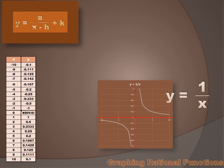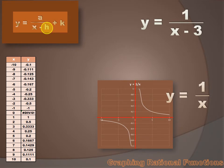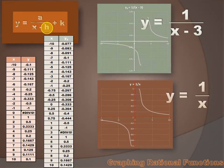We've only got one left — that h. What do changes in h do to the graph? In the parent function, h is 0: y equals 1 over x minus 0. But what if the equation was y equals 1 over x minus 3? How would the graph be changed? Well, this is a little less intuitive than all the others. But if we create a table and graph it, you're going to see something very interesting.